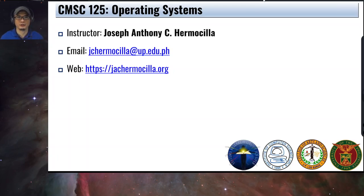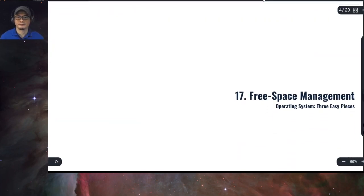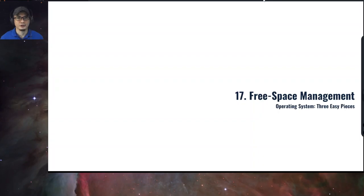Hello students, welcome to another video lecture for ComSci 125 Operating Systems. In this video, we're going to talk about free space management. Remember that in an operating system, specifically when it comes to managing memory, there should be a way for the operating system to allocate memory to user processes. As discussed in the video on the memory API, we have the main interfaces for memory requests, specifically malloc and free. We're going to look at the mechanisms on how a library implements these functions.